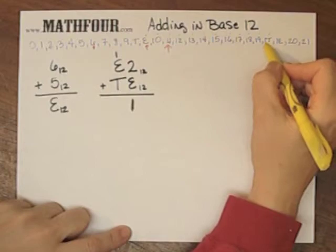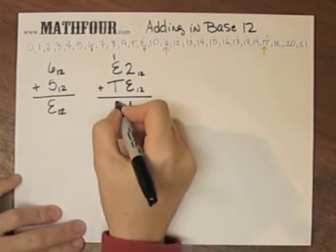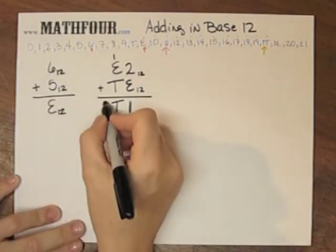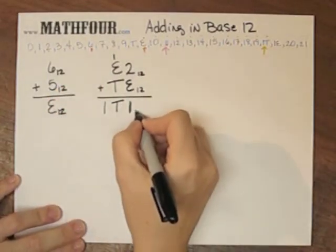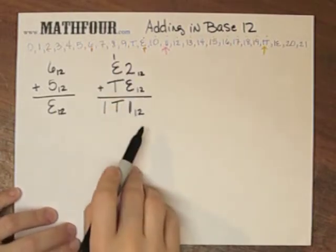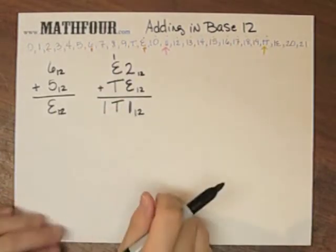So here I have one T. So I would put the T down and carry the 1, but I have nothing to carry, so I'll put that one here. So that's adding E2 base 12 plus TE base 12. And I get one T1 base 12.